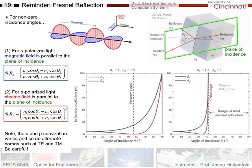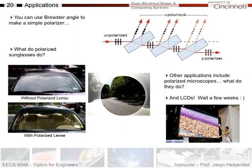Let's look at why this might be practically important. First, you can use the Brewster angle to make a simple polarizer. Take a bunch of microscope slides or glass sheets, feed in unpolarized light, and the S-polarized light will always be Fresnel reflected. But if you have these at the Brewster angle, P-polarized light experiences no Fresnel reflection, so it gets through. With more and more glass slides, you'll only get P-polarized light out — a very simple way to make a polarizer.